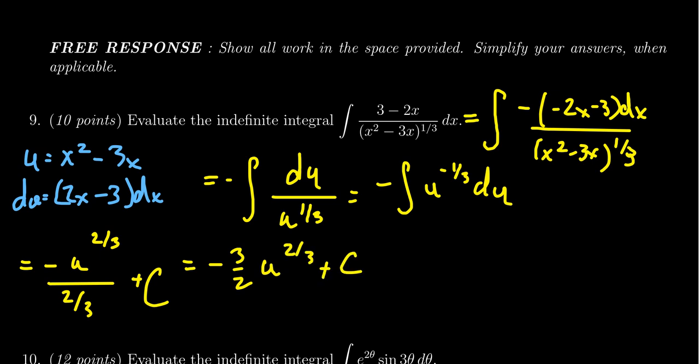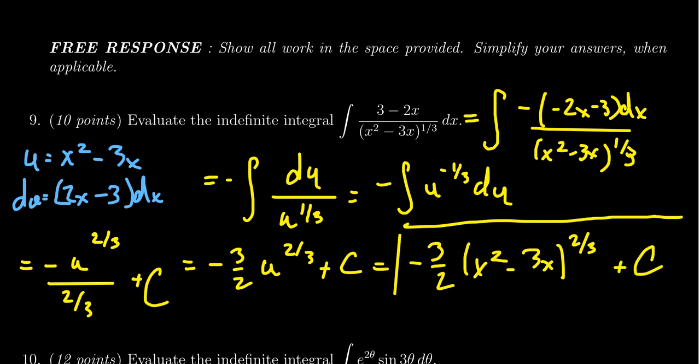Now the antiderivative is computed. We just need to plug back in the original value for u, and so we end up with an antiderivative of negative three-halves times x squared minus three x raised to the two-thirds power plus an arbitrary constant. Do remember the constant there. It's not full credit if you don't have that plus c.